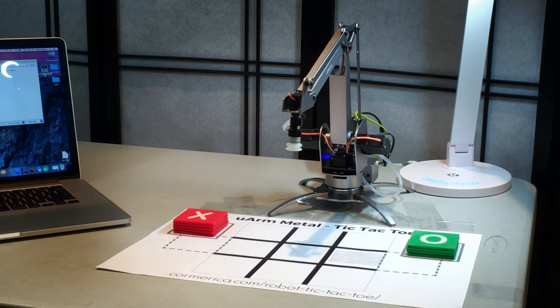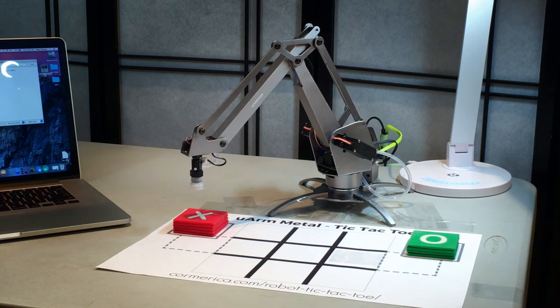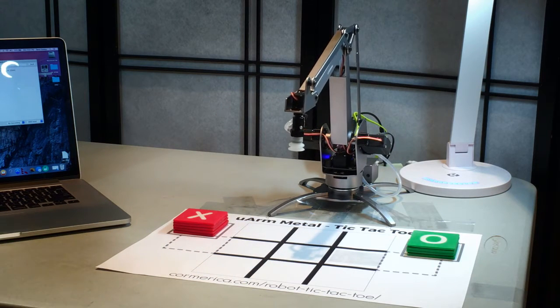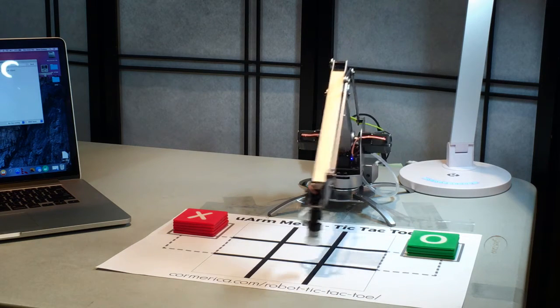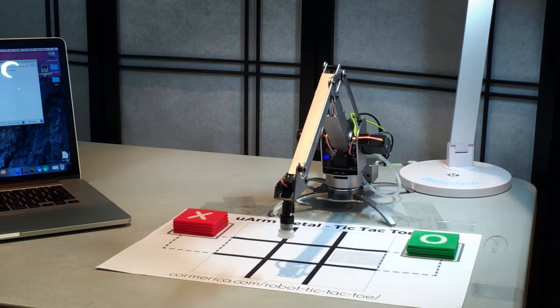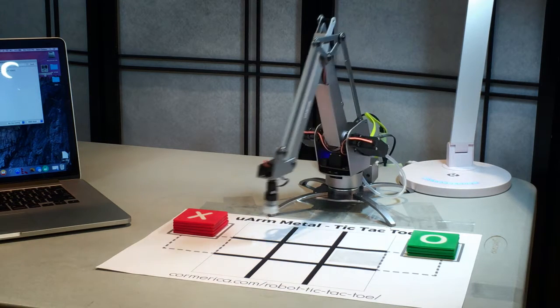So the robot needs to know which marker it's using and where it wants to place it. And though he can't see, he's aware of the positions of all the squares on the board and each of the stacks of markers. Internally, he maintains a picture of the current state of the board based on the moves he makes and the moves we tell him that we're making.